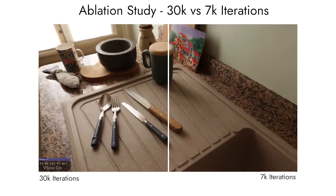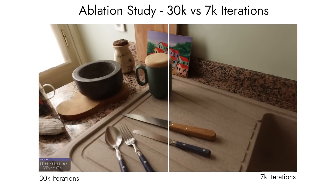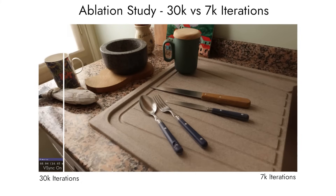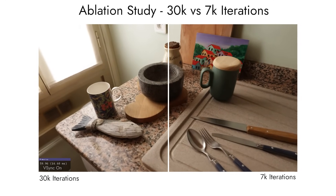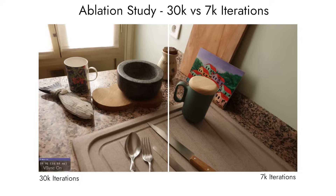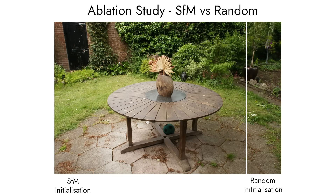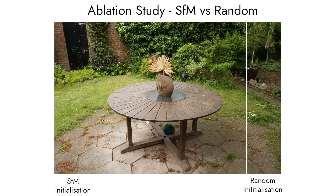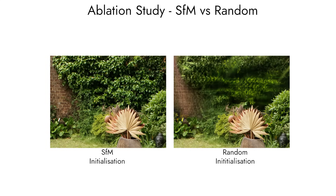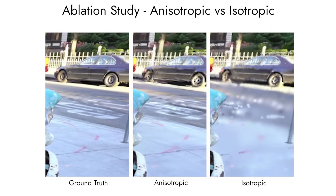We also did a careful ablation study to evaluate the different design choices of our algorithm. We show that even if we stop training at 7000 iterations — approximately 6 minutes — we retain great visual quality. We also show what happens if instead of using the SfM point cloud for initialization, we initialize with a random set of points sampled uniformly in the scene. Another important element of our method is the anisotropy of the 3D Gaussians, which has a big impact on final quality.